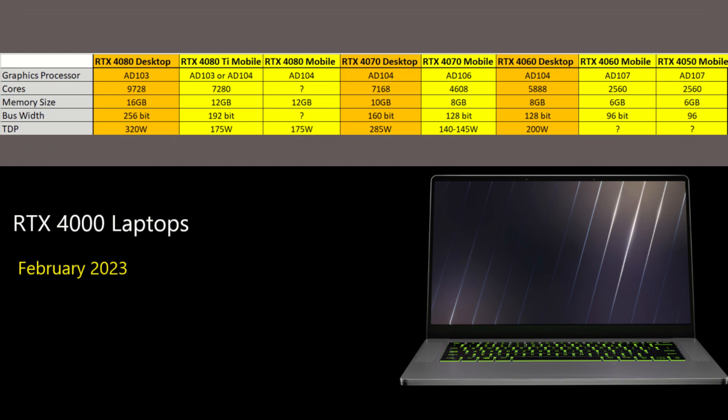For the high-end laptops, we will see an RTX 4080 Ti and an RTX 4080. The Ti version will have 25% less cores than the desktop 4080 and will have a TDP of 175 watts, which is 45% lower. The mobile 4080 will no doubt have less cores, but will have the same amount of memory and I imagine the same memory bus and TDP. The mobile RTX 4070 will have 35% less cores than the desktop and its TDP is 50% less, so it is even more gimped than the 4080 Ti.